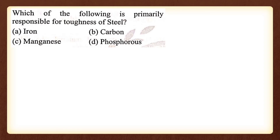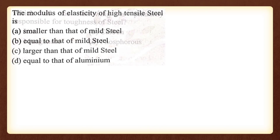Which of the following is primarily responsible for toughness? Manganese is responsible for toughness in steel. Carbon content controls strength. Option A — manganese — is the correct answer.